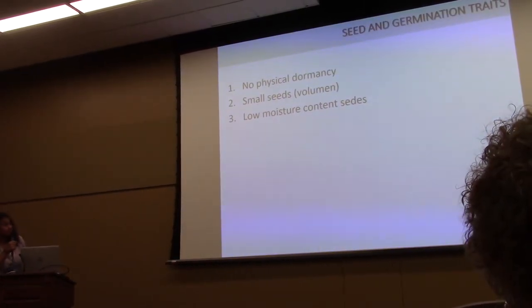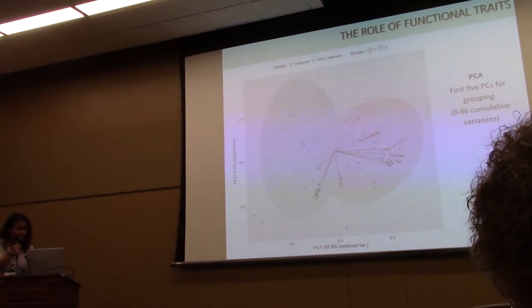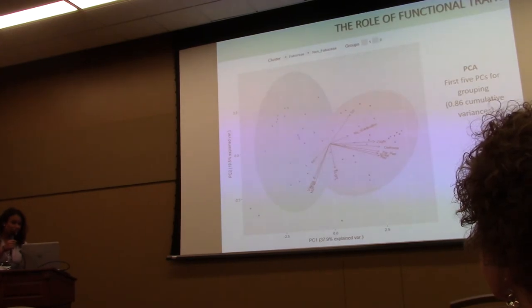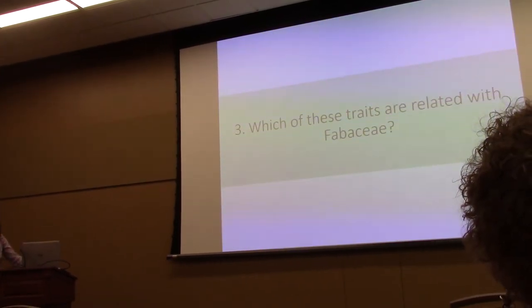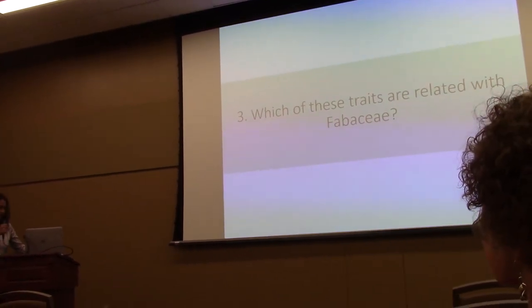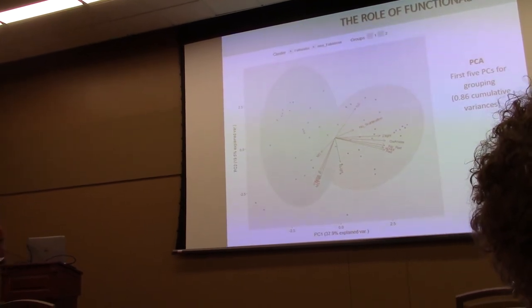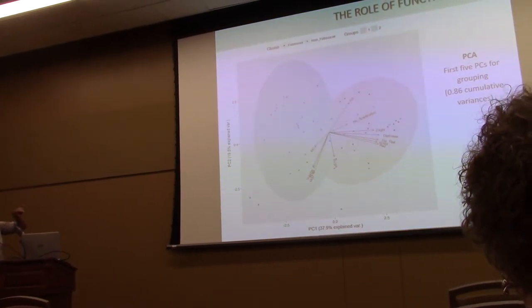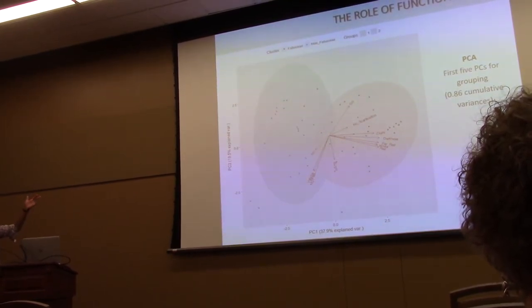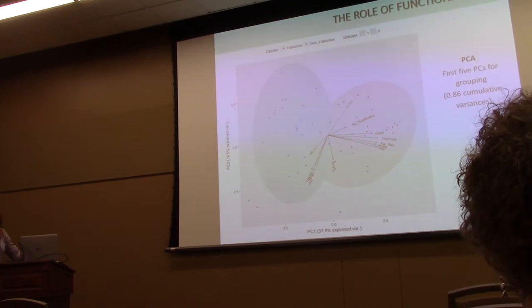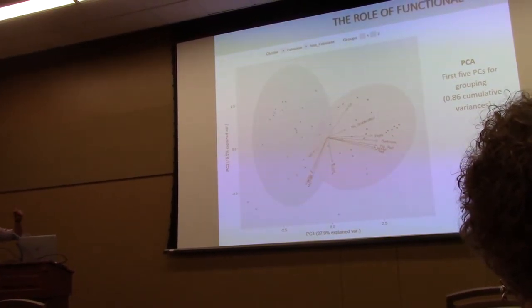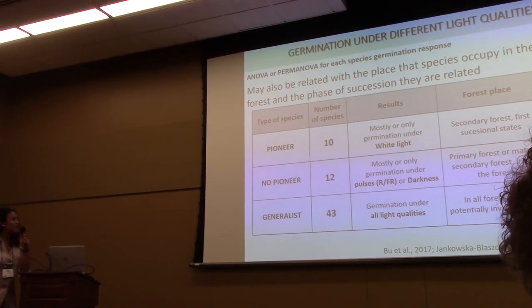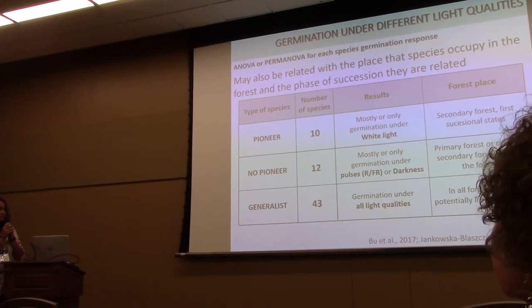Those are the significant traits we found in relation to germination. For the third question — which of these traits are related to Fabaceae — we performed a PCA and grouped species by Fabaceae and non-Fabaceae. The Fabaceae species (shown in red) and the non-Fabaceae species (shown in blue/green) separated clearly. Fabaceae species germinate more, faster, and also germinate under all light conditions.